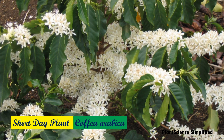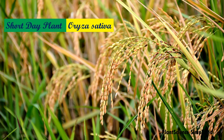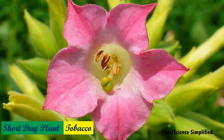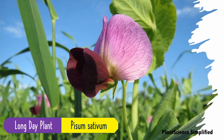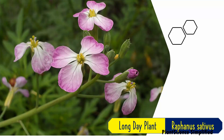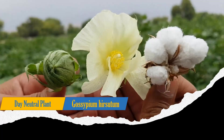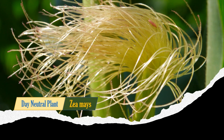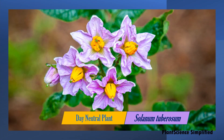Coffee, rice, and tobacco are examples of short day plants. Beetroot and Raphanus sativus are long day plants. Day neutral plants include cotton, maize, and potato. Hope this particular lecture was useful to you. Thank you for listening.